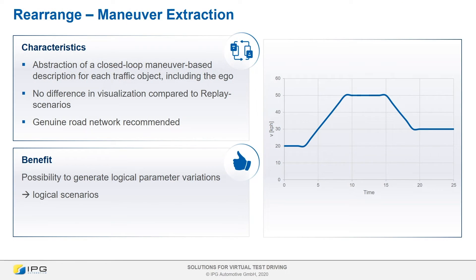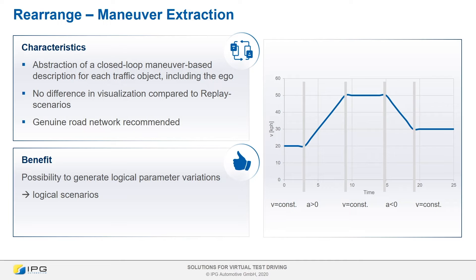In the next step, called Rearrange, we enable the generation of variations. So far, we have only transferred a concrete scenario from the real world to the virtual world. To generate variations of parameters easily, a maneuver extraction is required. For each traffic object, a closed-loop maneuver-based description is abstracted.